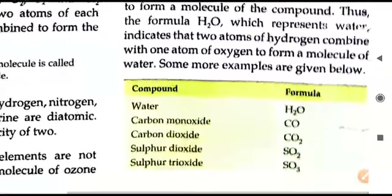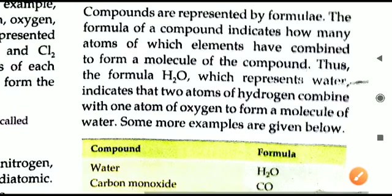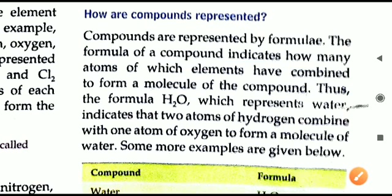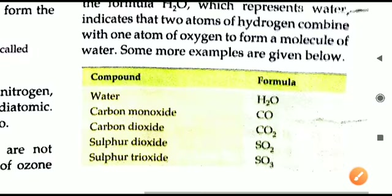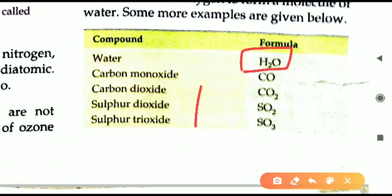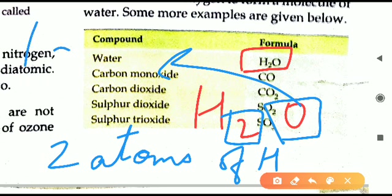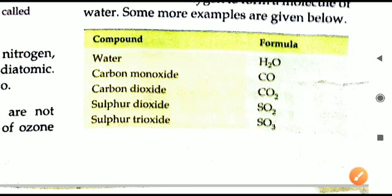If only a formula is written, what information does it provide? The formula of a compound indicates how many atoms of each element are present in one molecule. For example, H₂O tells us there are two atoms of hydrogen — because the subscript 2 is written — and one atom of oxygen, since no number is written after O, meaning only one atom is there.